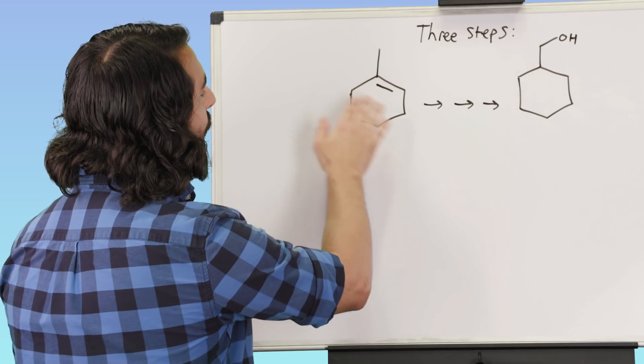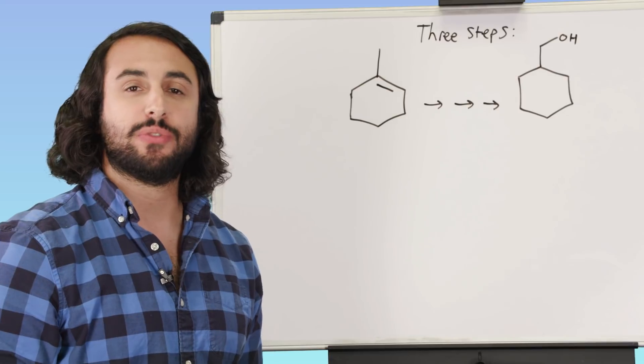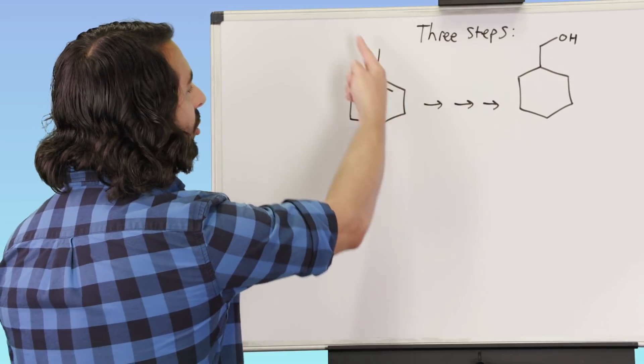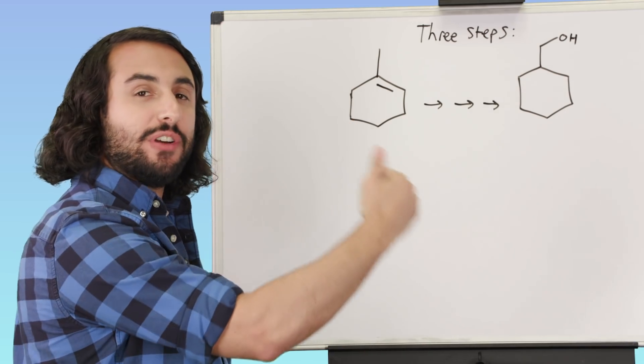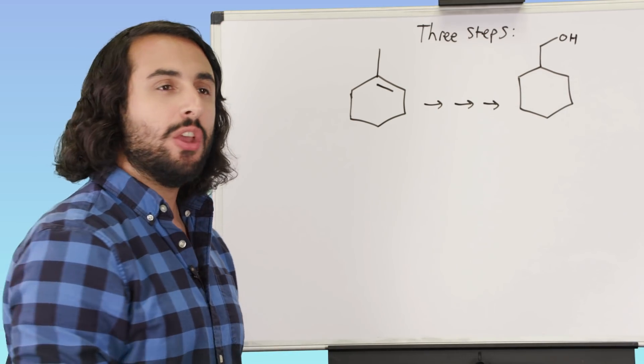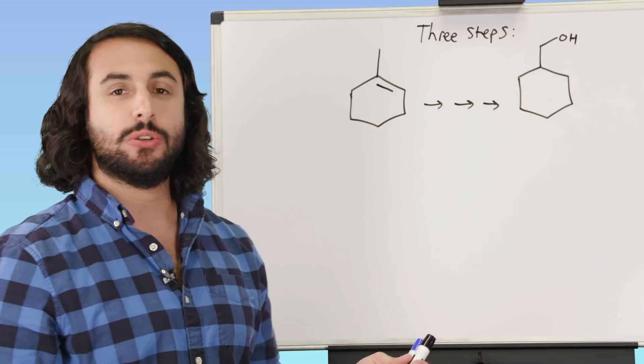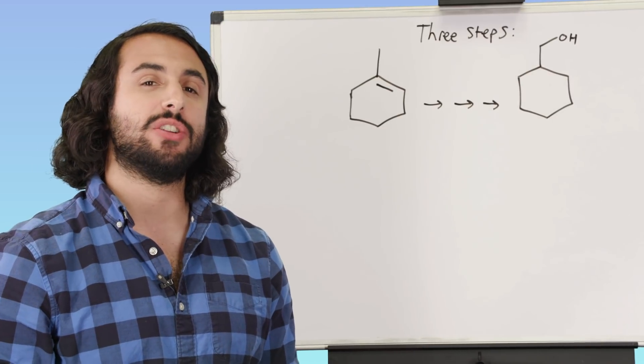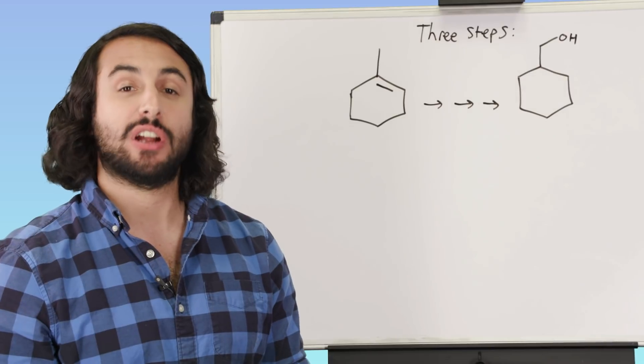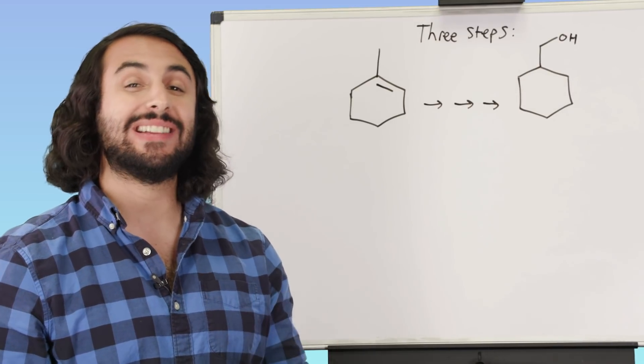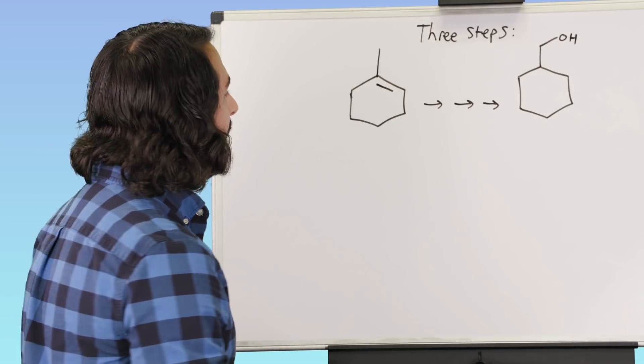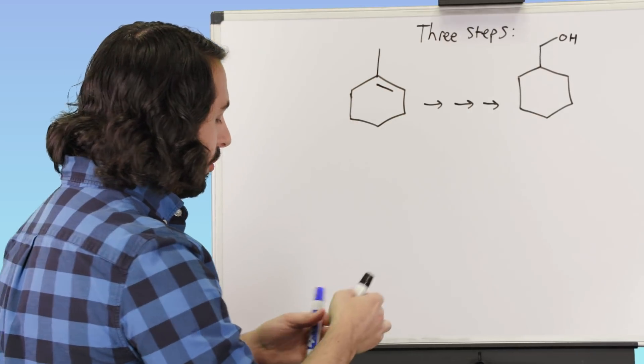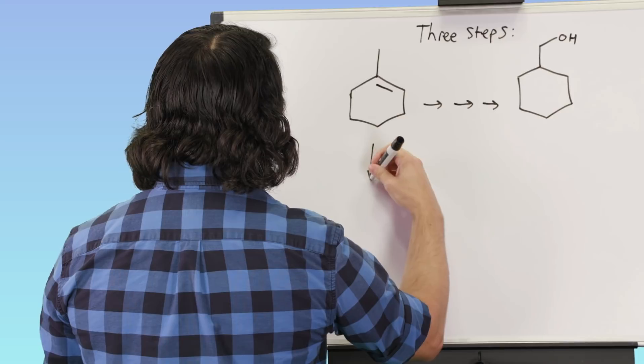If we want to do an addition reaction, we know we can do some different addition reactions with alkenes, and we want to try to get the action up there. We want to try to get functionality up in that part of the molecule. So let's say we do a hydrohalogenation. Now what kind of hydrohalogenation do we want to do? We could do a Markovnikov hydrohalogenation or an anti-Markovnikov one, and if we want to have things going up in that direction, we might want to do a Markovnikov hydrohalogenation.